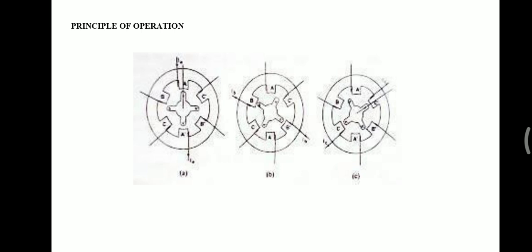Thus the motor attains steady speed. At the steady state condition, power drawn from the mains is equal to the time rate of change of stored energy in the magnetic circuit. That's all about the principle of operation of switch reluctance motor. Thank you.